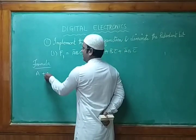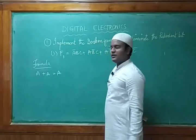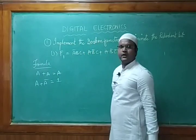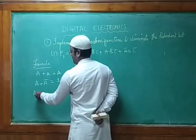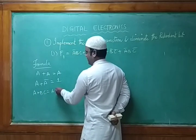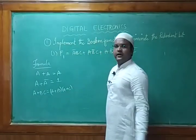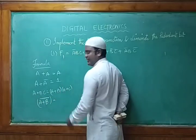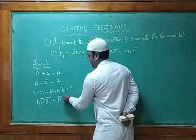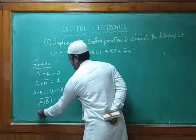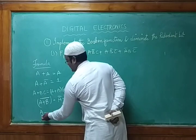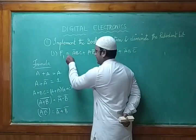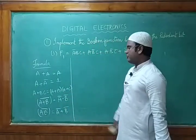The key formulas are: a + a = a; a + ā = 1; and a + b·c = (a + b)·(a + c). We also know De Morgan's first law: (a + b)' = a'·b', and the second: (a·b)' = a' + b'. You need to remember these formulas in order to solve this expression.